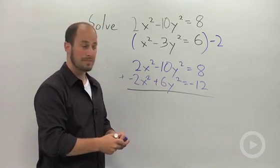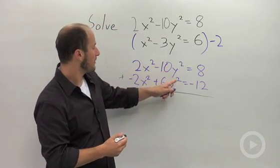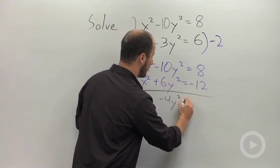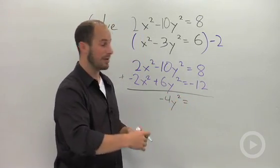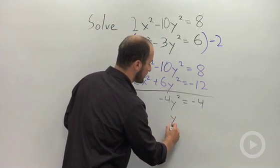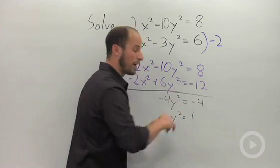Our x's cancel. We end up with negative 10y squared plus 6y squared which is going to be negative 4y squared and 8 plus negative 12 is negative 4. Giving me y squared equals 1.